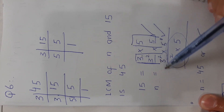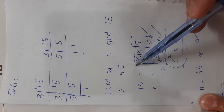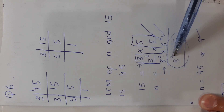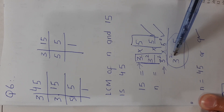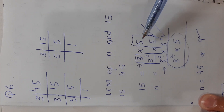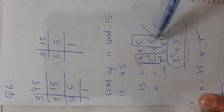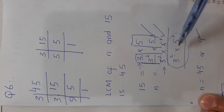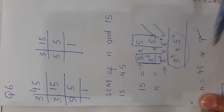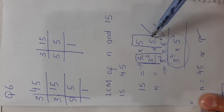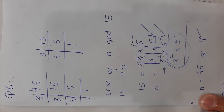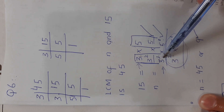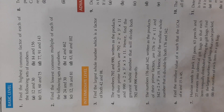Considering n = 9: from the factor of 15, 3 and 3² — take out 3² as maximum power; from 5¹ and 5⁰ — take out 5¹. LCM = 9 × 5 = 45. Both values of n give the same LCM, but since the question asks for the smallest value of n, the answer is n = 9.